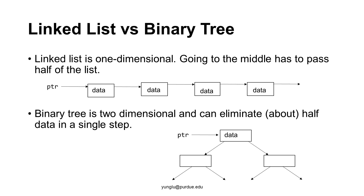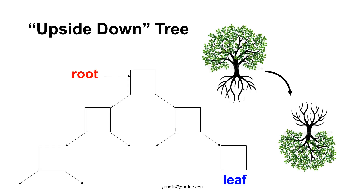It is possible to arrange the data so that half the data is on one side and half of the data is on the other side. By this structure, it is possible to eliminate half of the data in a single step by choosing left or right. When we talk about a tree, we usually think of the root at the bottom and the leaves at the top. For a binary tree, it is upside down.